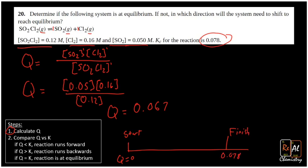Now we see with 0.067 we're about here. That number is smaller than 0.078, and that means we're going to need to run forward. So the question is, is it at equilibrium? No, it's not at equilibrium. Which direction does it need to run? It needs to make more products. It needs to run forward.